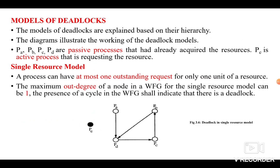The first one is the Single Resource Model. As the name implies, a process can request at most one resource — it can have only one outstanding request for one unit of a resource. The maximum out-degree of any node in the wait-for-graph (WFG) should be one; it cannot exceed the value one, because every process can have only one outstanding request.